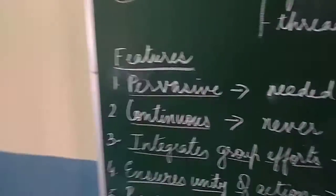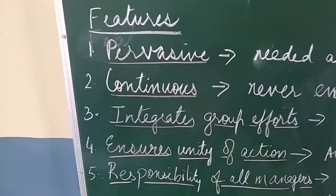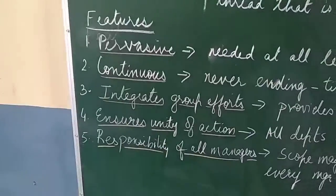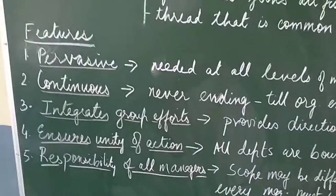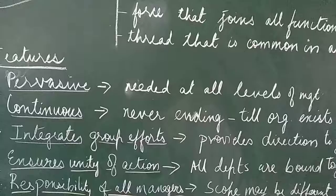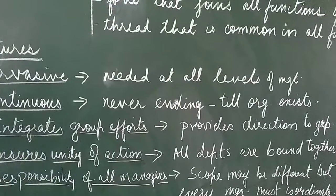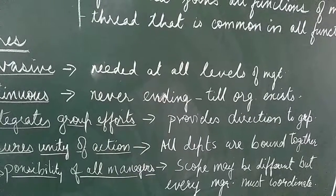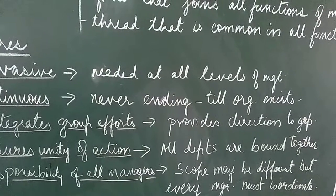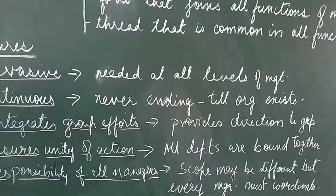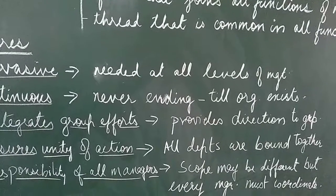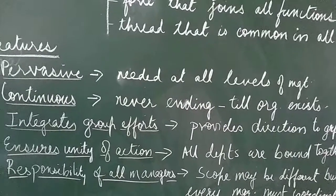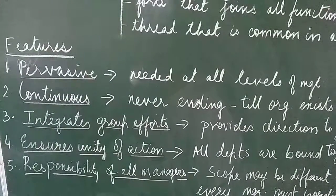Now we move on to the features of coordination. The first feature is pervasive. The word pervasive, as we studied earlier, means present at all levels. So here also, coordination is pervasive, it means it is needed at all levels of management. Now levels we have studied earlier: the top level, the middle level, and the lower level. So coordination is pervasive, it is needed at all levels of management.